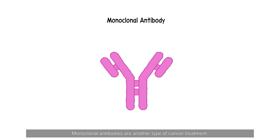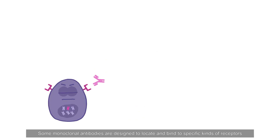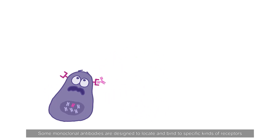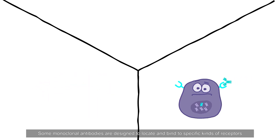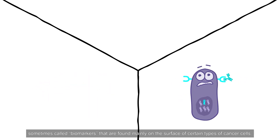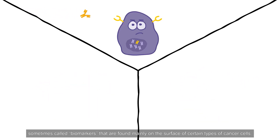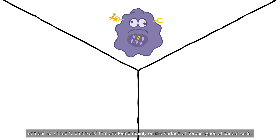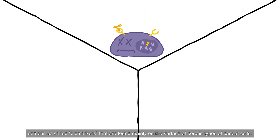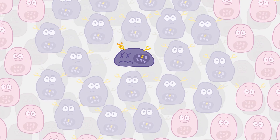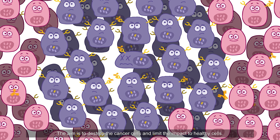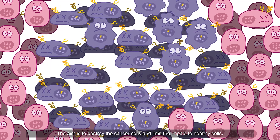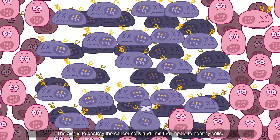Monoclonal antibodies are another type of cancer treatment. Some monoclonal antibodies are designed to locate and bind to specific kinds of receptors, sometimes called biomarkers, that are found mainly on the surface of certain types of cancer cells. The aim is to destroy the cancer cells and limit the impact to healthy cells.